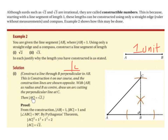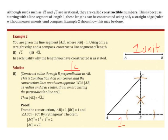The distance from A to C is root 2, so you can join those two points together. Here is the proof: from the construction, AB is equal to 1 unit and BC is equal to 1 unit. We did not change the compass width when drawing the arc along the perpendicular line, so the distance from B to C is also 1 unit.